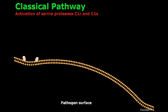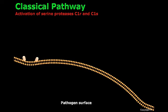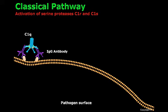When a single IgM or two IgGs recognize pathogens, C1Q will bind to the constant region of the antibodies, or Fc region. As a consequence of this interaction, the serine protease C1R will get activated, and activated C1R will be able to cleave and activate C1S.